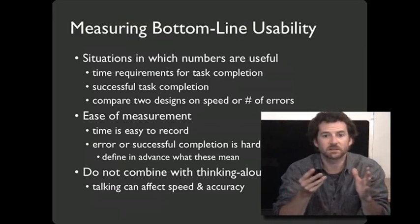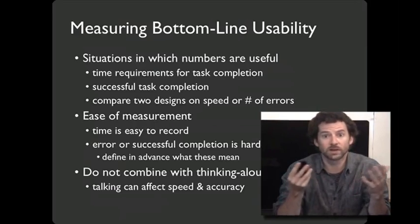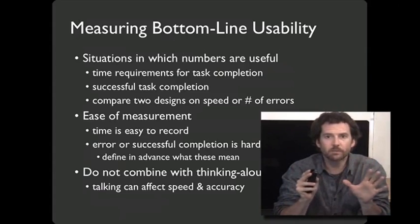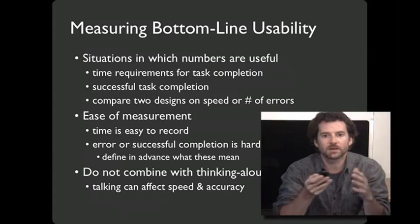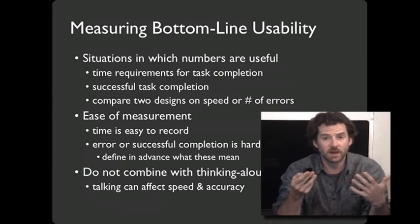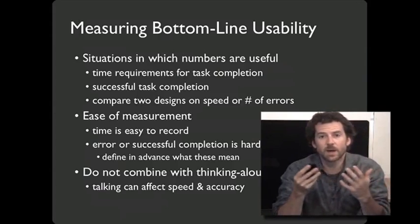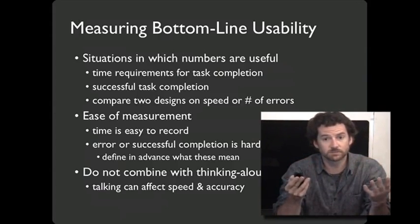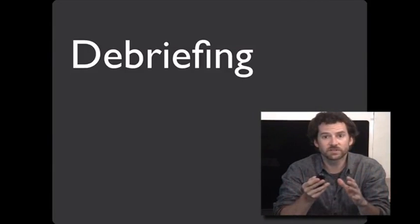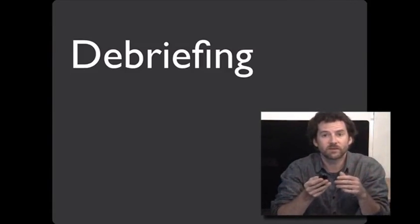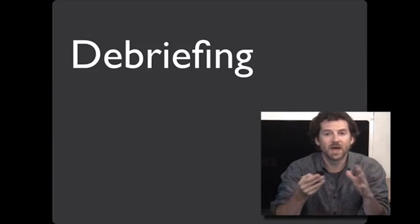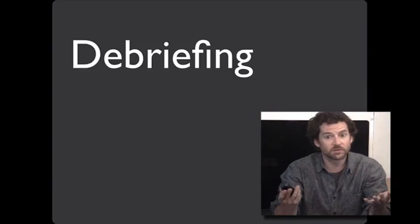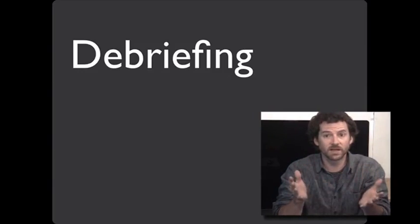Bottom-line numbers are great for things like task completion time — did my interface speed people up or increase completion rate? But don't combine timing with think-aloud. Think-aloud slows people down, and it slows different people down differently, so the variance it introduces means task completion time just doesn't make sense anymore. If you care about both numbers and think-aloud data, run them as separate studies. At the end of the study, debrief the participant so they learn what your goals were and can find out more, and so you can learn holistically what they're thinking after completing everything.